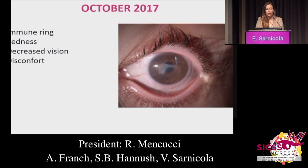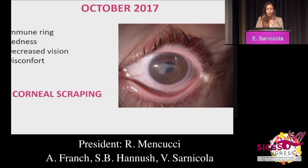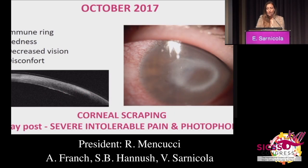But after one month, in October, she came back with haze and an immune ring. This could be consistent with herpetic keratitis, but it made us think that probably our diagnosis wasn't correct, because normally herpes responds quite well to the treatment we had administered. So we decided to go for a corneal scraping.